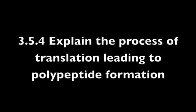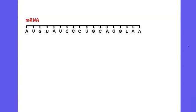Translation is the second stage of protein synthesis where a piece of mRNA is used to create a polypeptide chain. Firstly, let's go over the key terms.